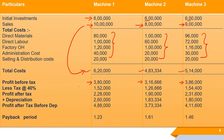After getting profit before tax, we deduct tax at 40%. Tax is always calculated on profit before tax. After deducting 40% tax, we get profit after tax: 2 lakhs 28,000 for Machine 1, 1 lakh 90,000 for Machine 2, and 2 lakhs 31,600 for Machine 3.